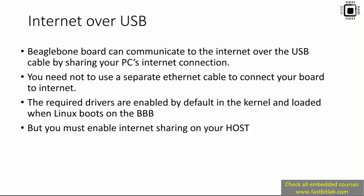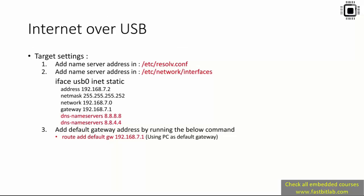The required drivers are enabled by default in the kernel and loaded when Linux boots on the board, but you must enable internet sharing on your host. For target settings, you have to touch two files: one is resolv.conf and another is the interfaces file in the /etc/network path. Then you have to add the default gateway address. The default gateway in our case is our host system.